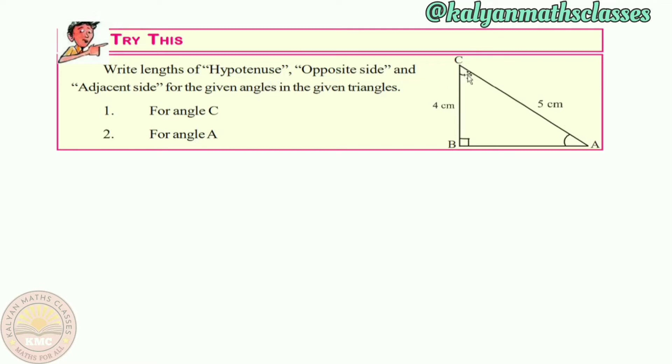So first of all, we have triangle ABC with right angle at B, and the acute angles are A and C. The side AC length is 5 cm, and the side BC length is 4 cm. So we have to find the third side.